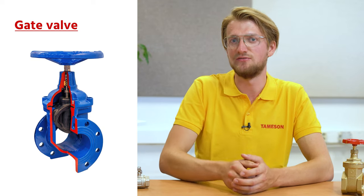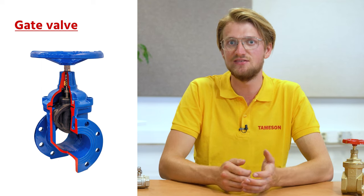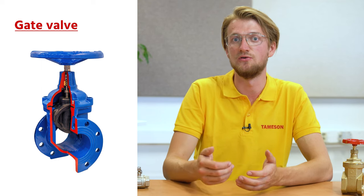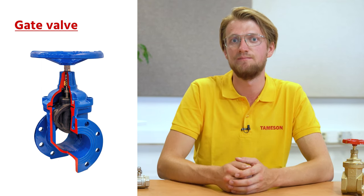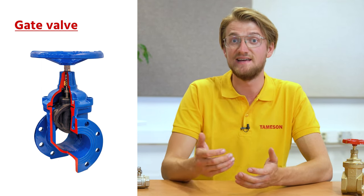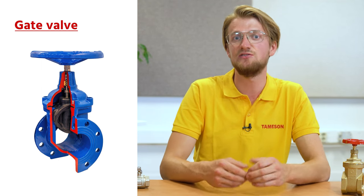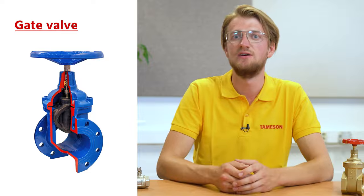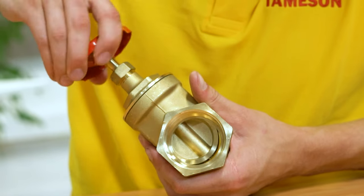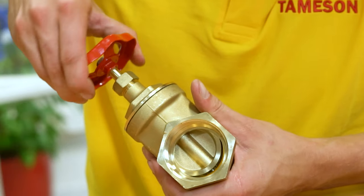A gate valve uses a gate to control the flow of media. The gate is connected to a spindle. Turning the spindle lifts the gate and opens the valve.